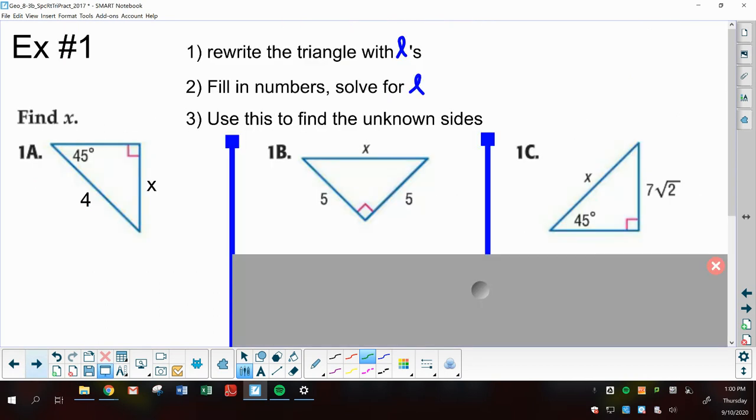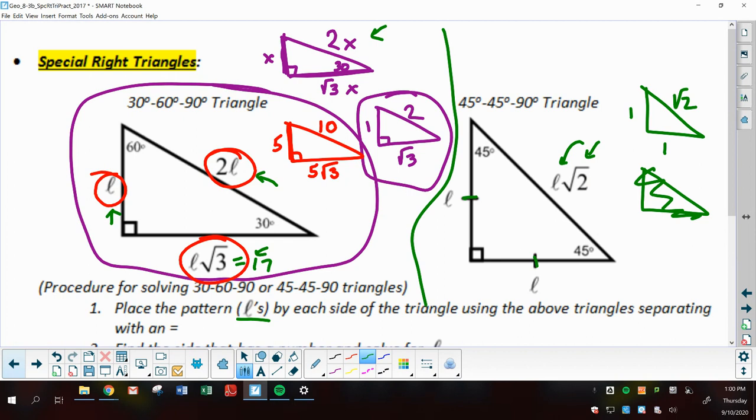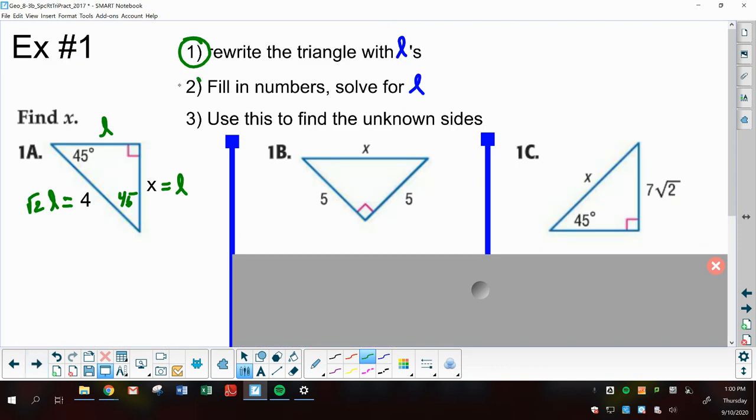And then I like to put equal signs after them. And then find the side that has a number and solve. So if I knew this side was 17, I would then put a 17 here and I'd solve for L or X. And then I'd use this answer to find the other side. So I'll explain that in a moment. But if you look at an example problem, here would be example 1A, 1B, and 1C. First of all, you need to identify which type of special triangle. This is a 45-45-90. So I'm going to start by rewriting this problem.